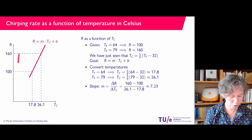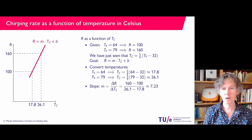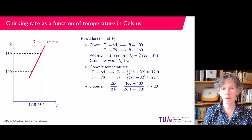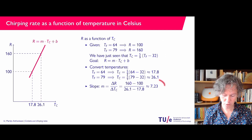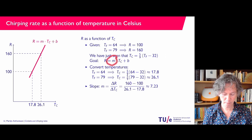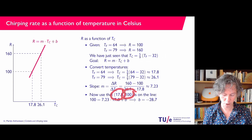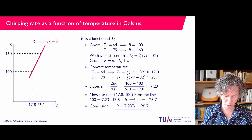Then I compute the slope: the difference in chirping rates (160 minus 100) in the numerator, and the difference in Celsius temperatures in the denominator. You find approximately M equals 7.23. To find B, I plug in the data point that for a temperature in Celsius of 17.8 the chirping rate is 100. I plug that in and we have the relation between chirping rate and temperature in Celsius.